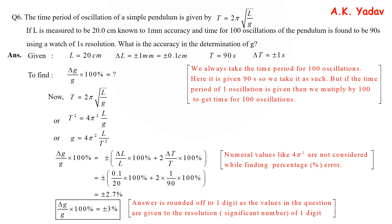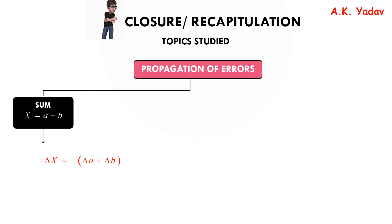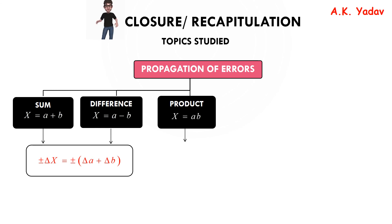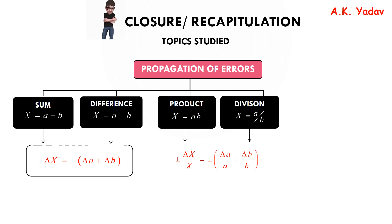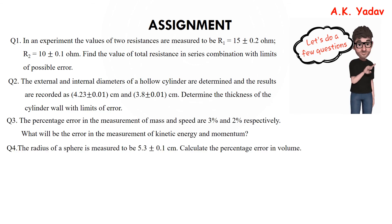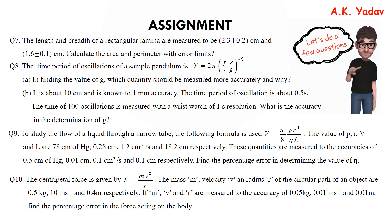Let's recap what we studied. Propagation of error: for sum x = a + b and difference x = a − b, ±δx = ±(δa + δb). For product x = ab and division, ±(δx/x) = ±(δa/a + δb/b). For power x = aⁿ, ±(δx/x) = ±n(δa/a). Now it's time for practice — here are 10 questions. Pause the video, try them on your own, and watch the next video for the answers. Thank you so much!